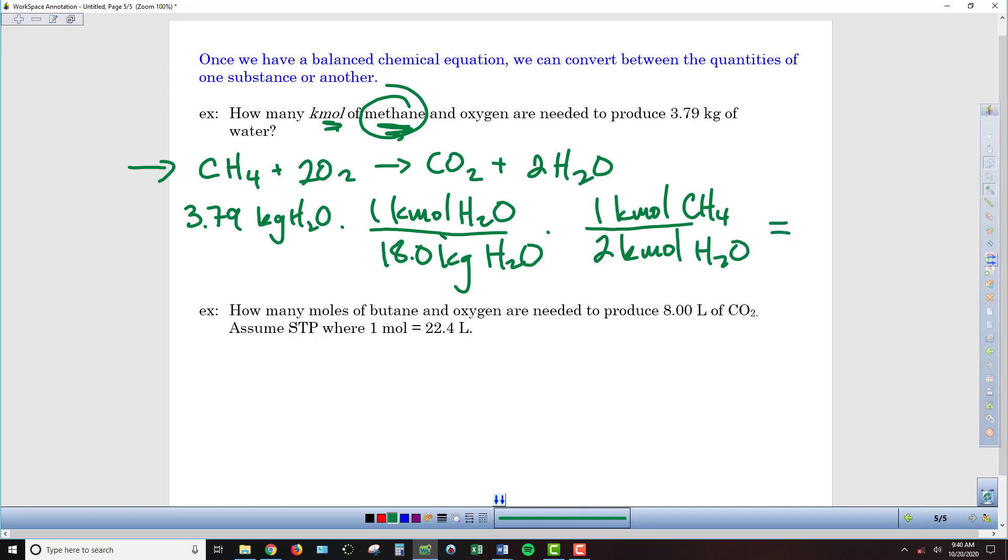Now, if we look at our balancing here, we've got the kilomoles of water cancel out, kilograms of water cancel out, leaving us with what we were asked for, which was the number of kilomoles of methane. And so if we punch buttons on our calculator, we get 0.105 kilomoles of methane.